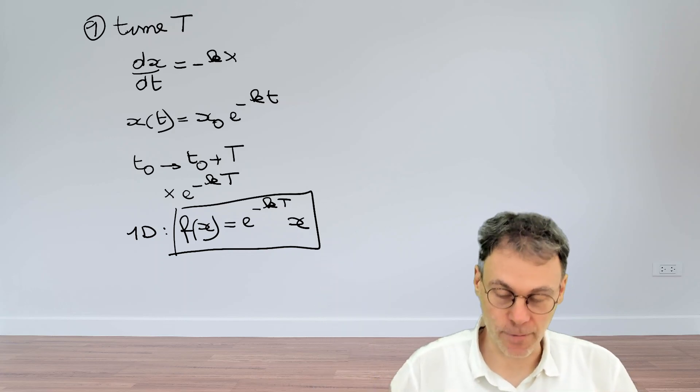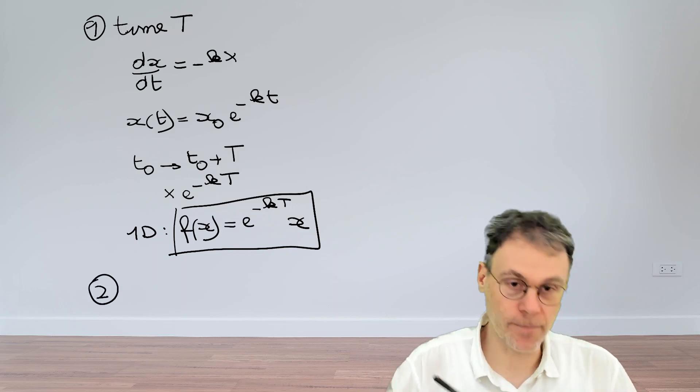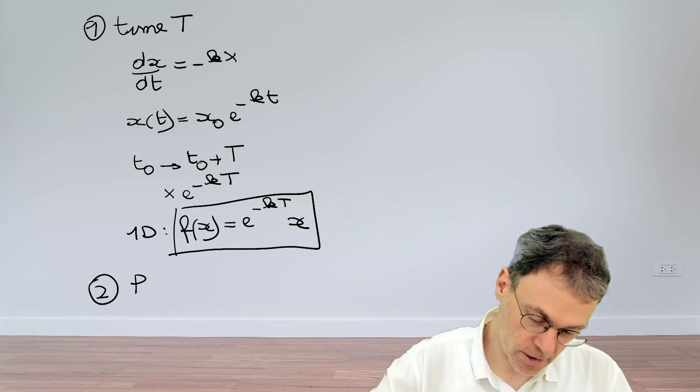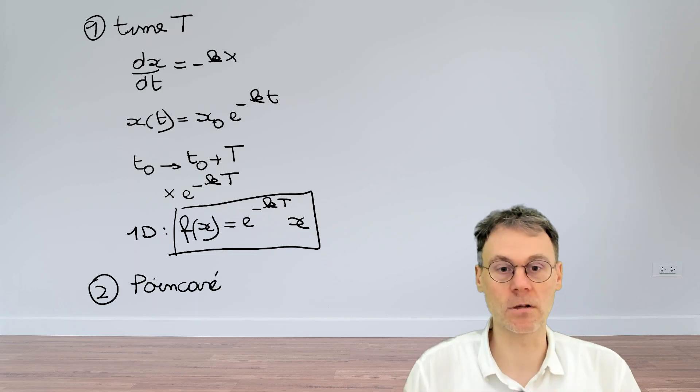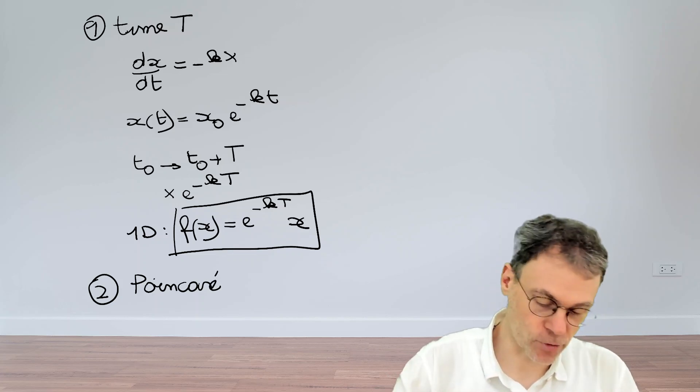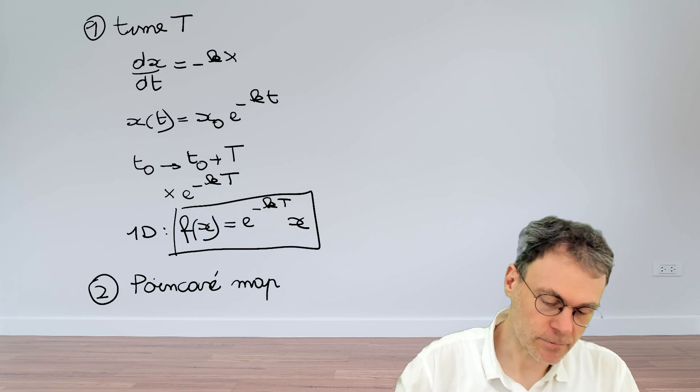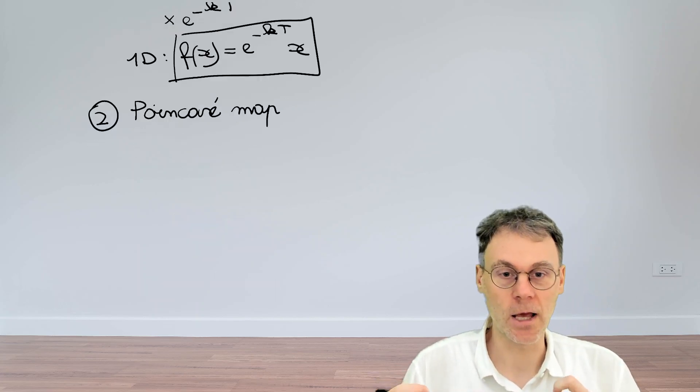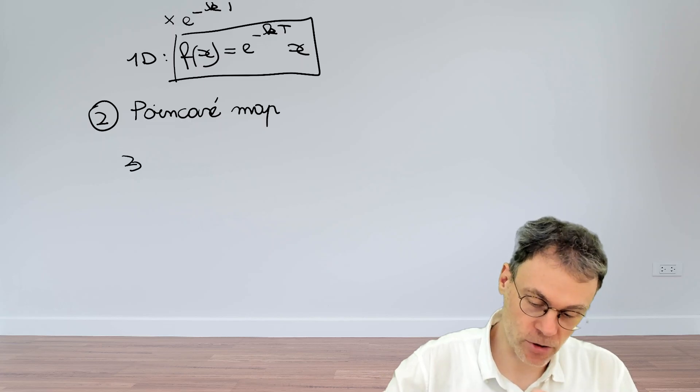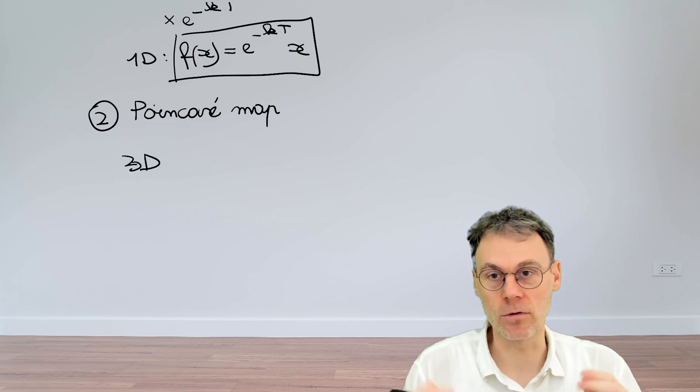So that's the first approach, time t maps. The other approach is something a bit different. And that's due to a very famous French mathematician Poincaré. So these are Poincaré maps. So what he was studying, for example, is three dimensional trajectories. And he wanted a way to simplify these things. So let's have a look at a figure of such a 3D trajectory.